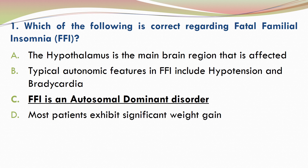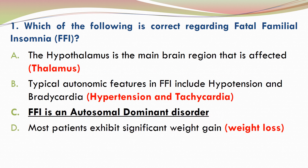Fatal familial insomnia is an autosomal dominant disorder. A is incorrect. The thalamus is the main brain region that is affected. B is incorrect because the typical autonomic features in FFI include hypertension and tachycardia. D is incorrect because most patients with FFI exhibit significant weight loss.